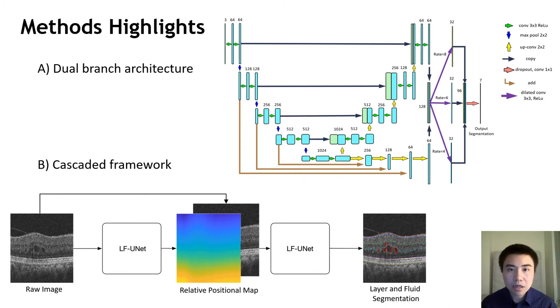Secondly, we proposed a cascaded network framework that first computes the anatomical priors as an intermediate step to achieve better segmentation accuracy.